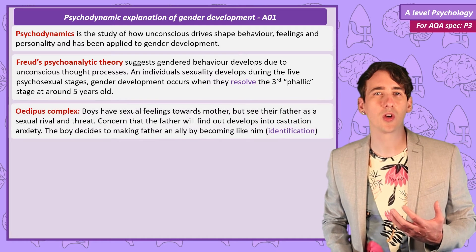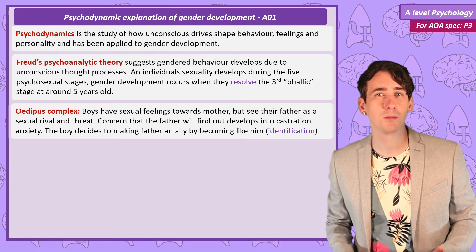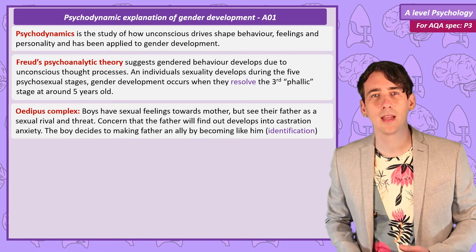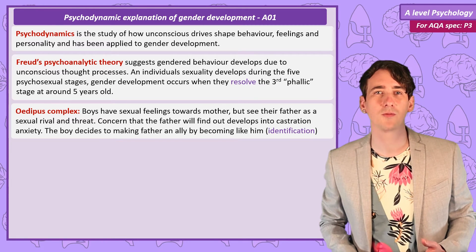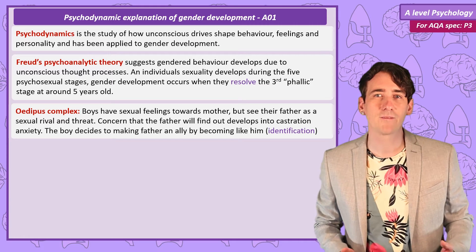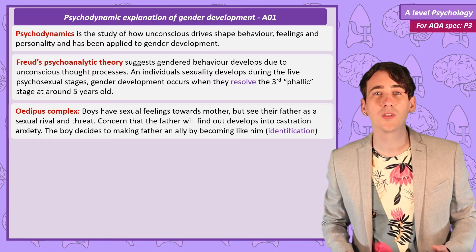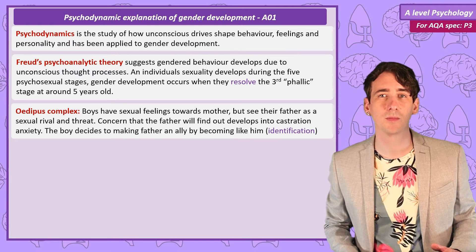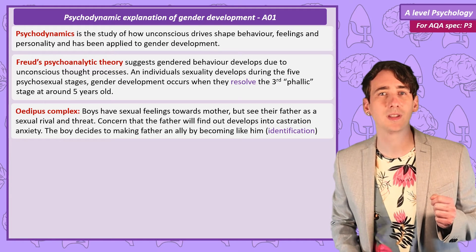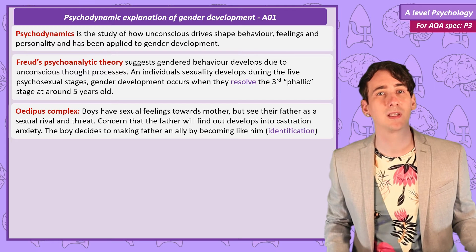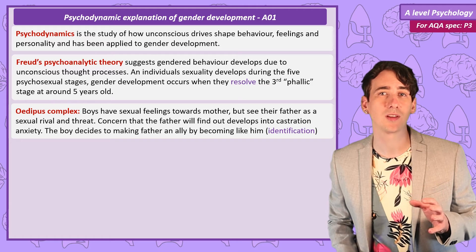At the phallic stage, boys are thought to resolve the Oedipus complex. They express sexual feelings towards the mother, but the father is there as a rival. As the father is much bigger than the boy, he's scared of the father and experiences something called castration anxiety — a fear that the father will find out and remove the boy's genitals. Understanding that he can't win the mother's affection from the father and the father is too big physically to fight, the boy resolves the complex by deciding to be like the father, becoming his ally, and through a process of identification, learning his father's masculine behaviours.